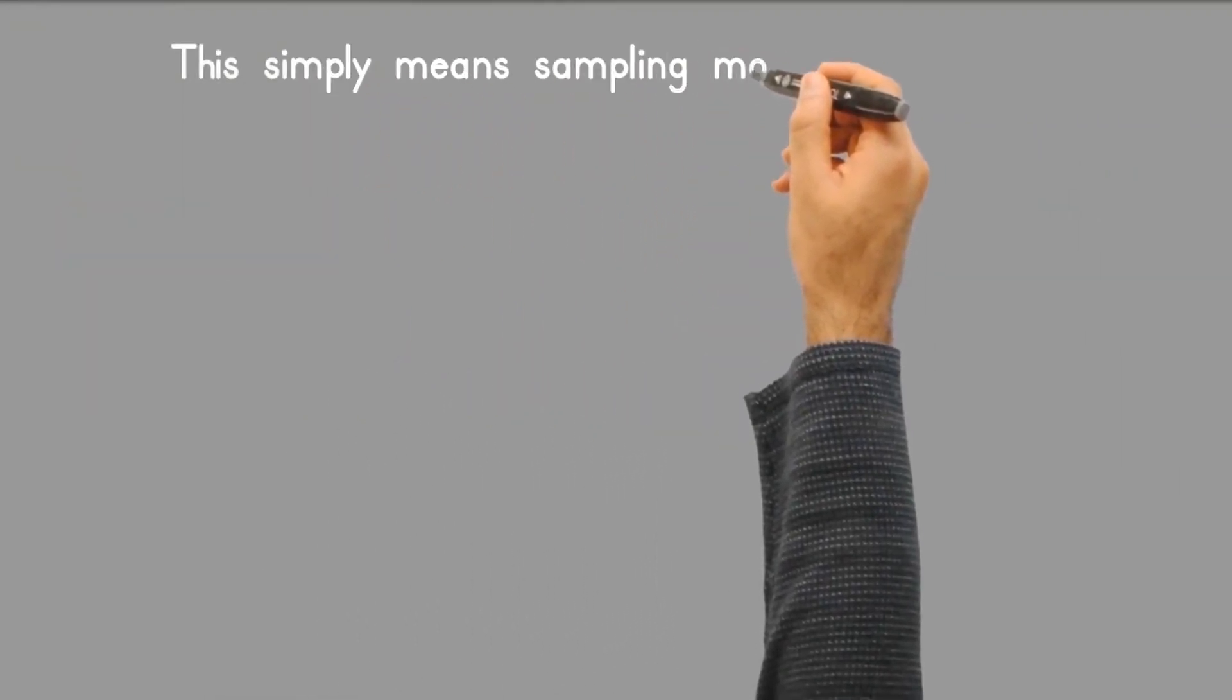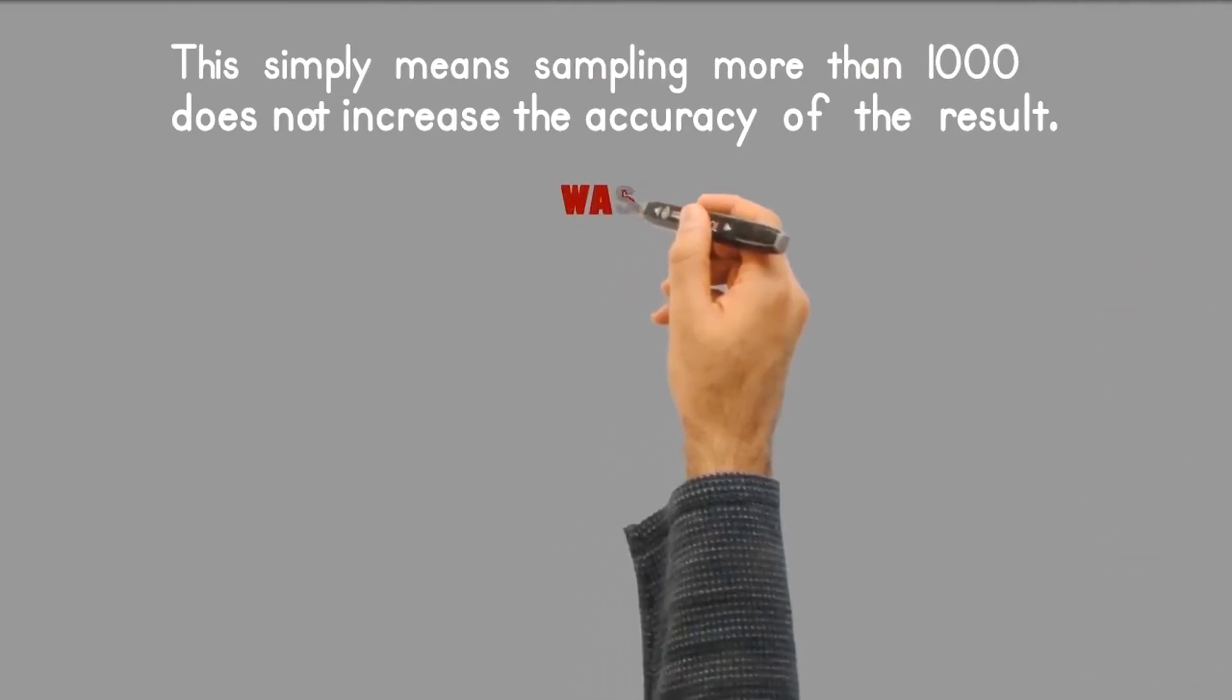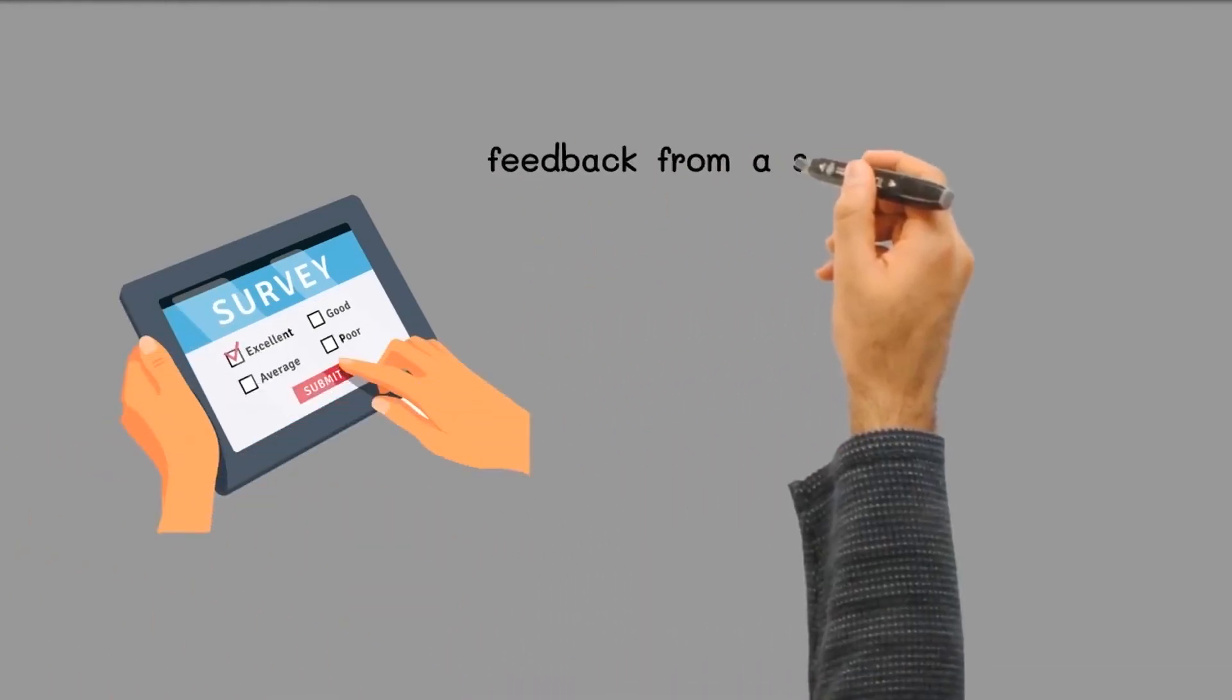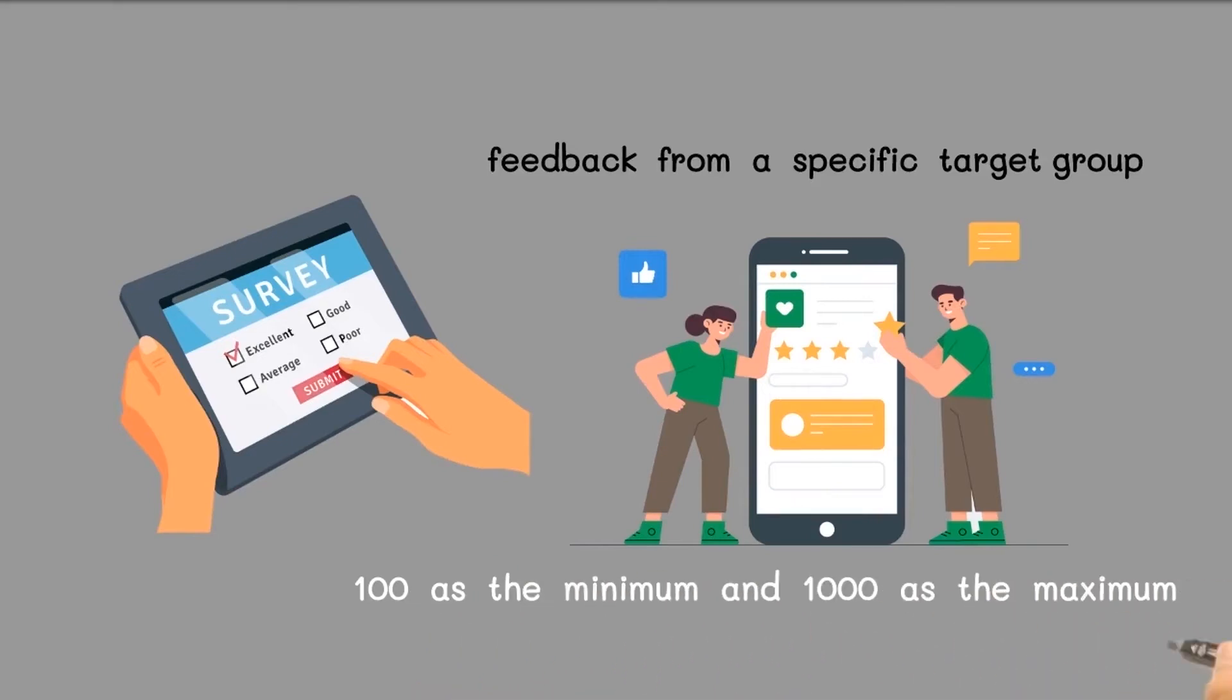This simply means sampling more than 1000 does not increase the accuracy of the result. It has only become a waste of money and time. Therefore, we conclude that in any survey where you need feedback from a specific target group, a range of 100 as the minimum and 1000 as the maximum is appropriate.